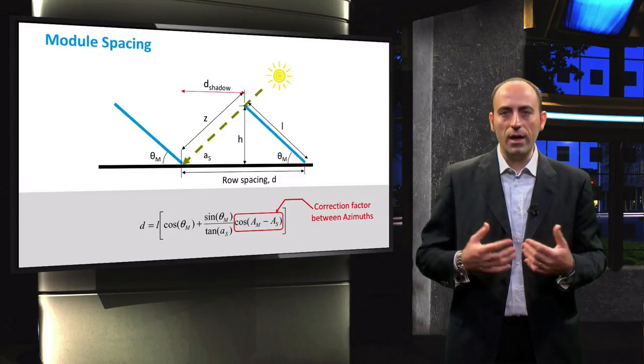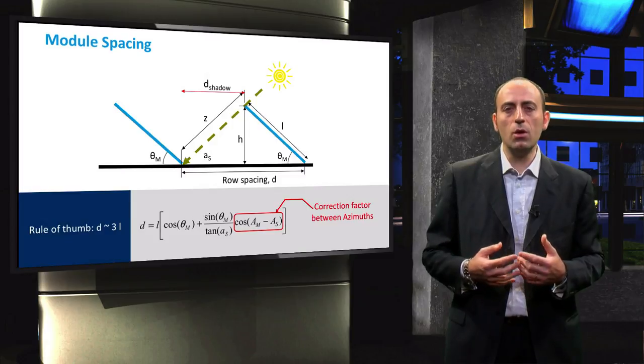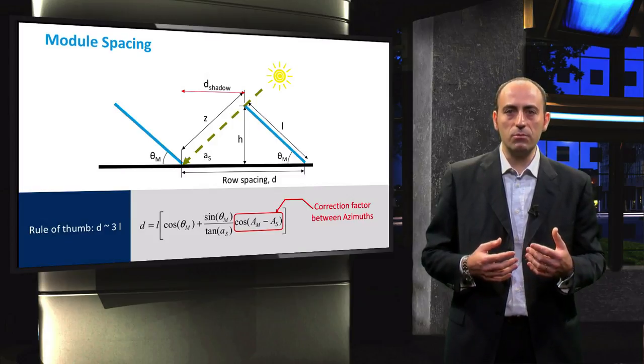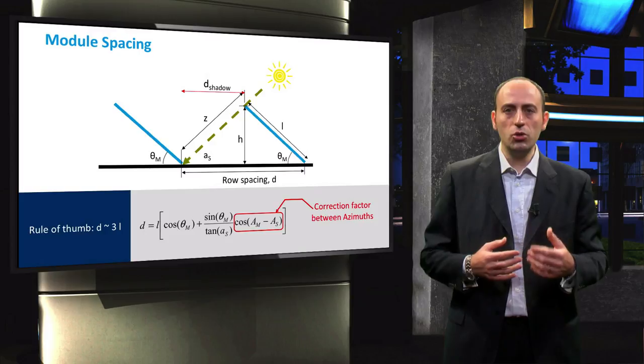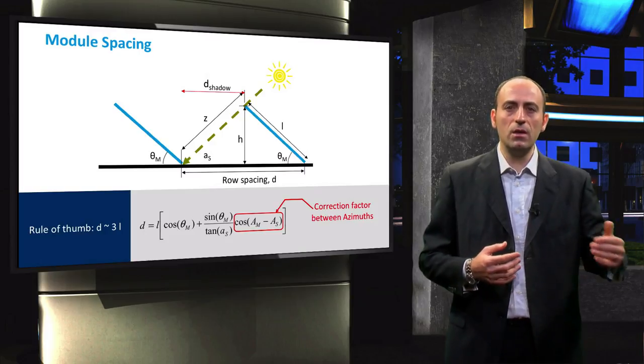However, for a first quick estimation, one can use the rule of thumb that the distance between two rows of modules should be at least 3 times the length of the module.